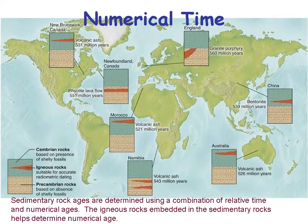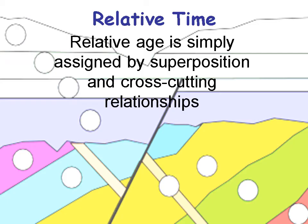Sedimentary rocks are dated using a combination of relative time and numerical ages. Here's an example of sedimentary deposits with igneous rocks embedded in them — say, volcanic ash or rhyolite lava. You can measure the numerical time from the volcanic rocks embedded in the sedimentary rocks, then compare the sedimentary rocks to others using fossils, to know how old something is from one part of the Earth to another.